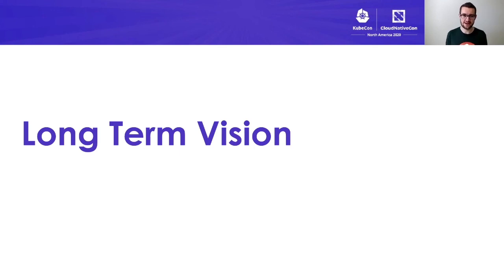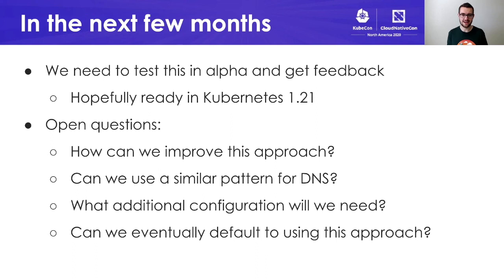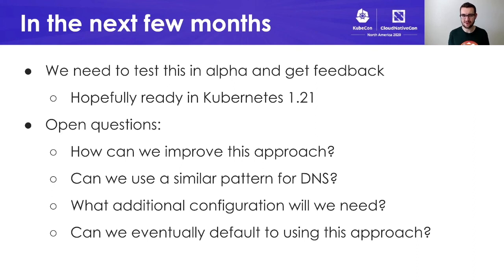With that, I want to talk just a little bit about our long-term vision. We're still in a pre-alpha stage, very early in this process, and we still could use feedback and a lot of work. Our first priority is to get this into alpha and get some feedback — we're hoping we'll hit that target in Kubernetes 1.21. We also have a number of open questions: how can we improve this approach? We'd love to hear ideas. We're also interested in whether we can use any kind of similar patterns for DNS, whether there's any additional configuration needed for power users or advanced use cases, and on the other side, can we eventually make this good enough that we can just make this the default and won't need any configuration at all?